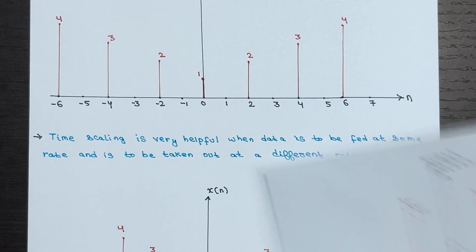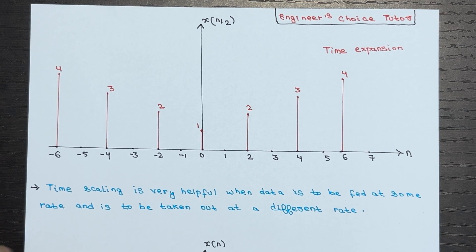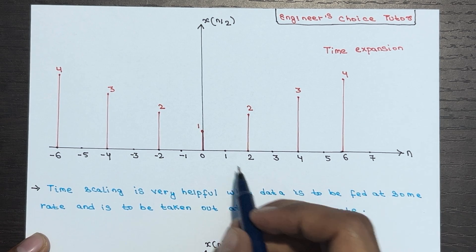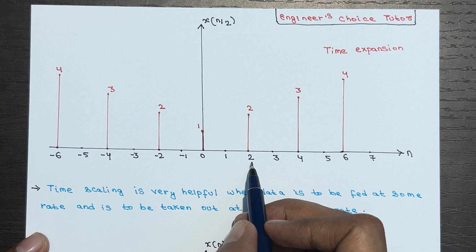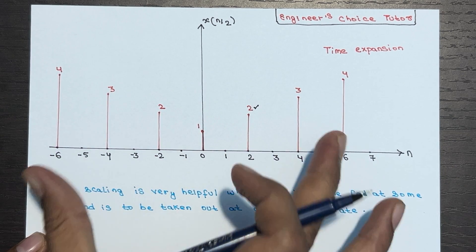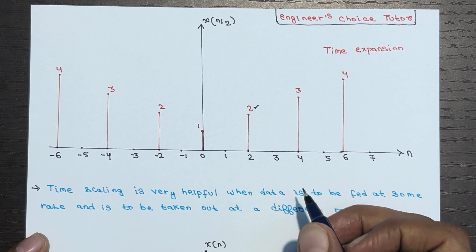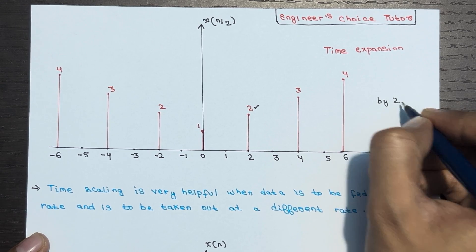If you draw the diagram for this, you get time expansion. The value that was at n=1 is now at n=2. The signal got expanded. Here the signal is expanded by 2.